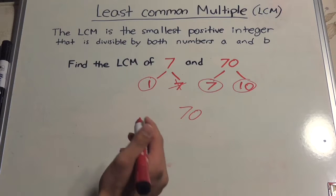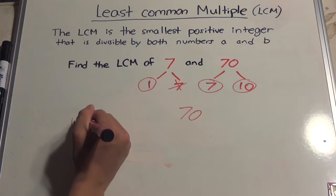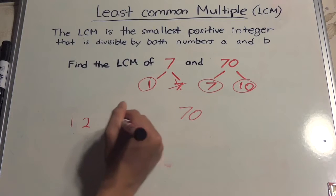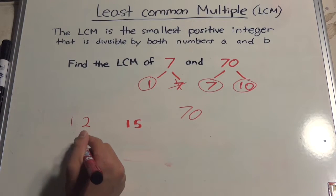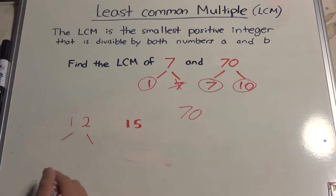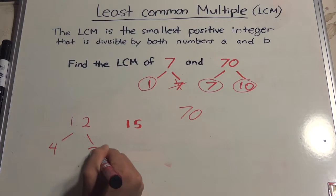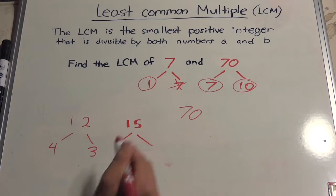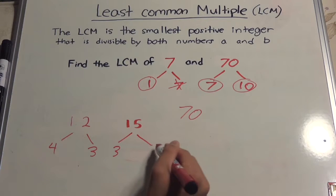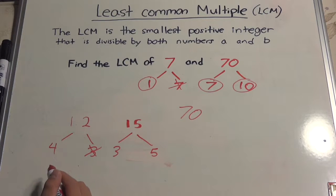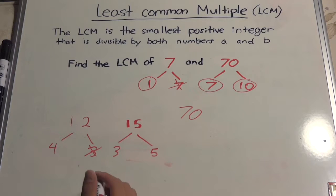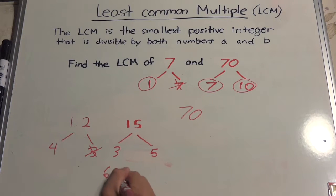Let's find the LCM of 12 and 15. If we find the factors of 12, we get 4 and 3. The factors of 15 are 3 and 5. 3 and 3 match up, so we can get rid of one of the 3s and multiply the rest: 4 times 3 times 5, which is 60.